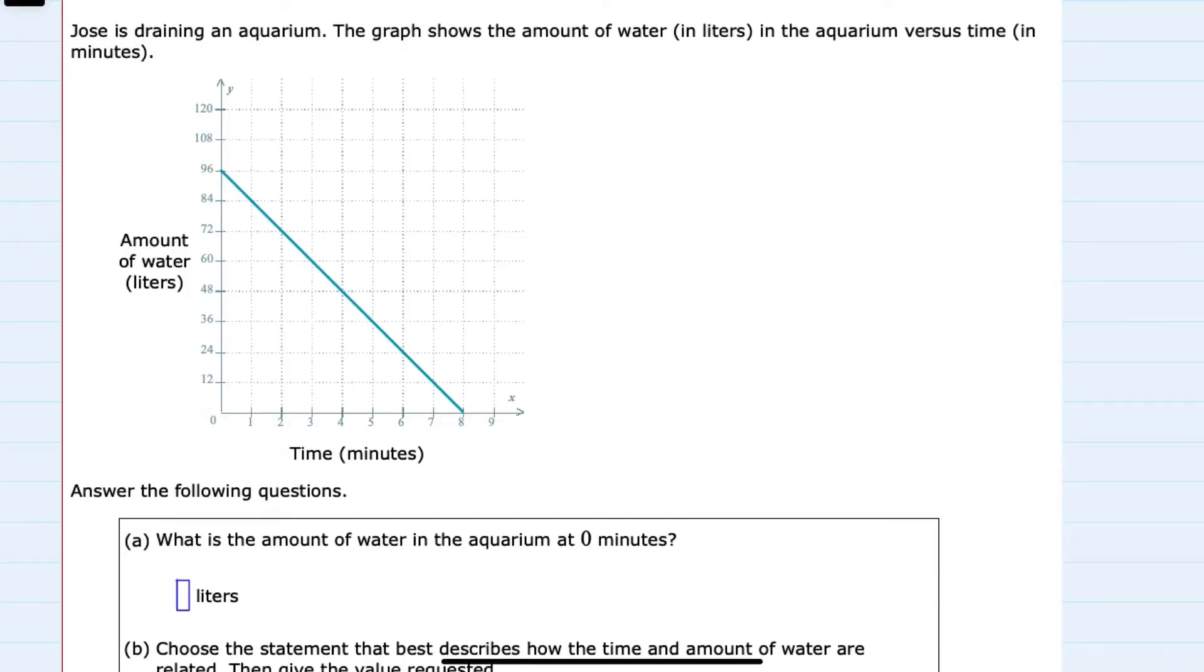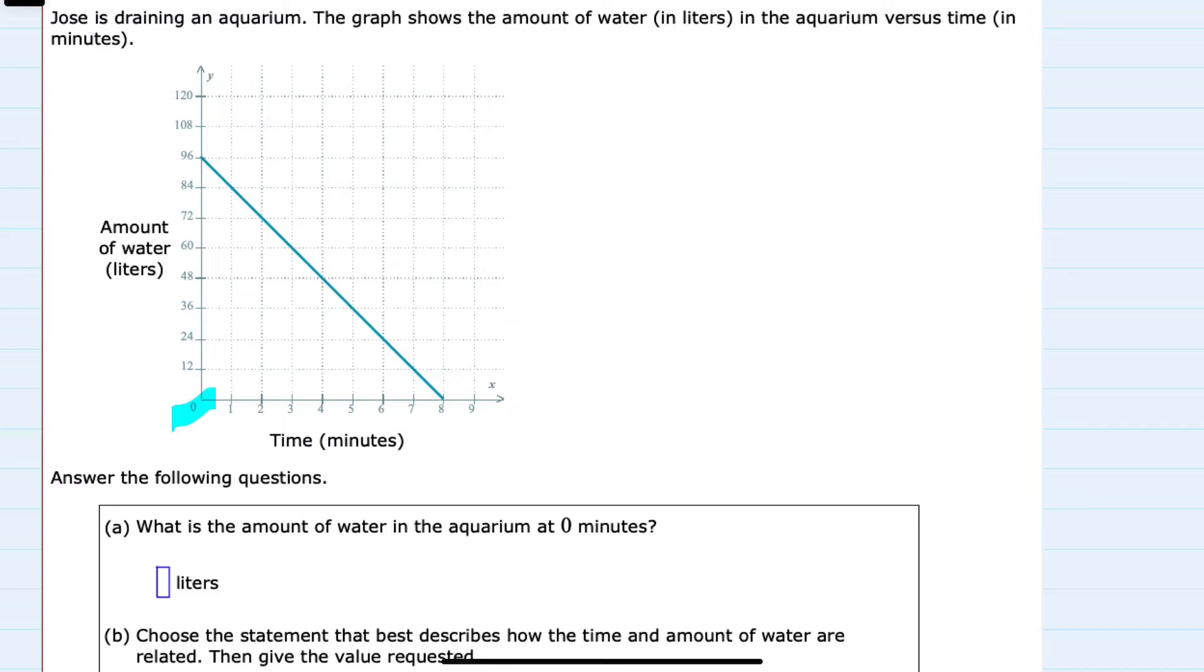And the first question is, what is the amount of water in the aquarium at zero minutes? So looking here at zero minutes, the amount of water in the aquarium is 96 liters. So at zero minutes, there are 96 liters.